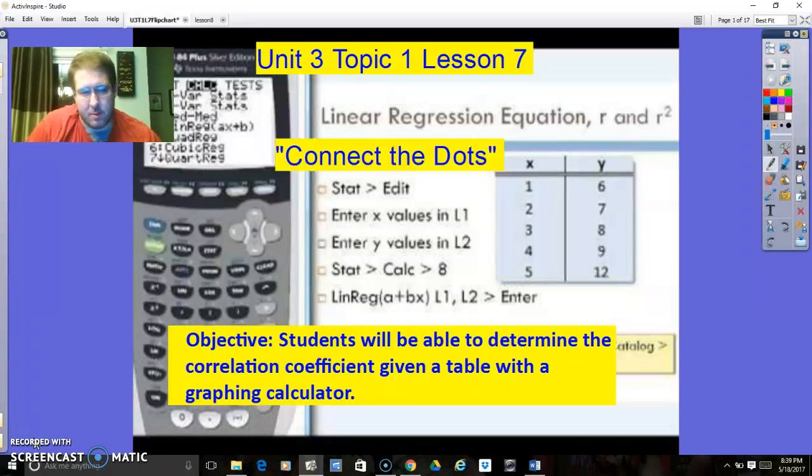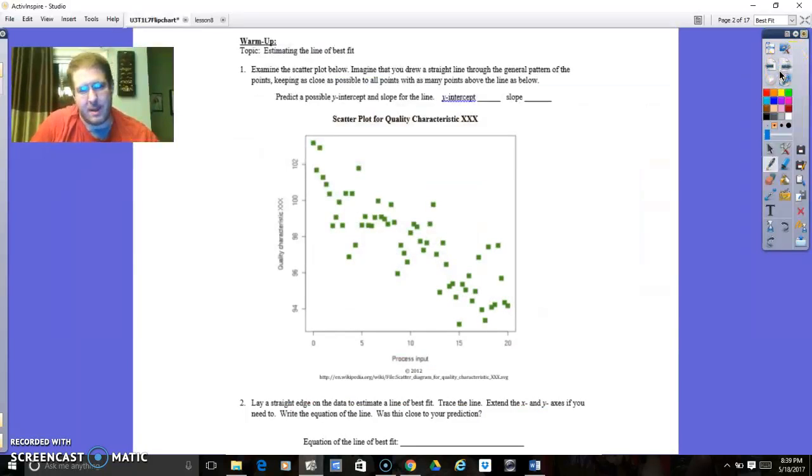So once again, we're doing statistics, and we're talking about how we can analyze data. In this case, correlation coefficient tells us how far apart the data is away from the trendline.